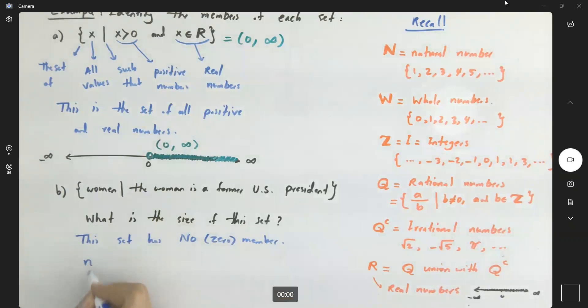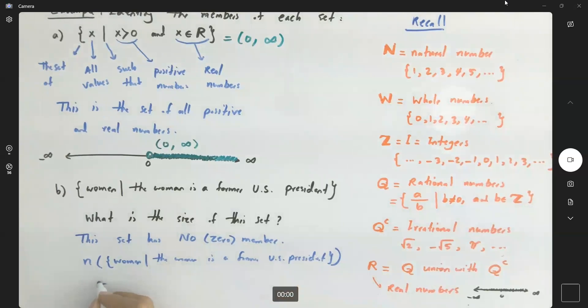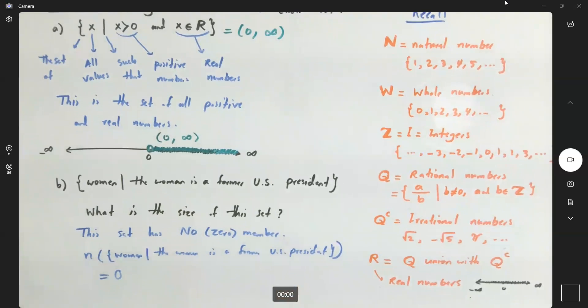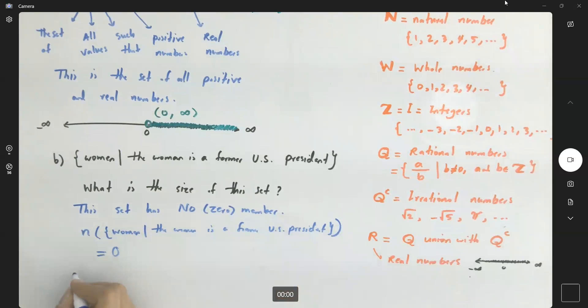The size of this set, the set of all women such that the woman is a former U.S. President, is zero. It has zero members. They call this set an empty set.